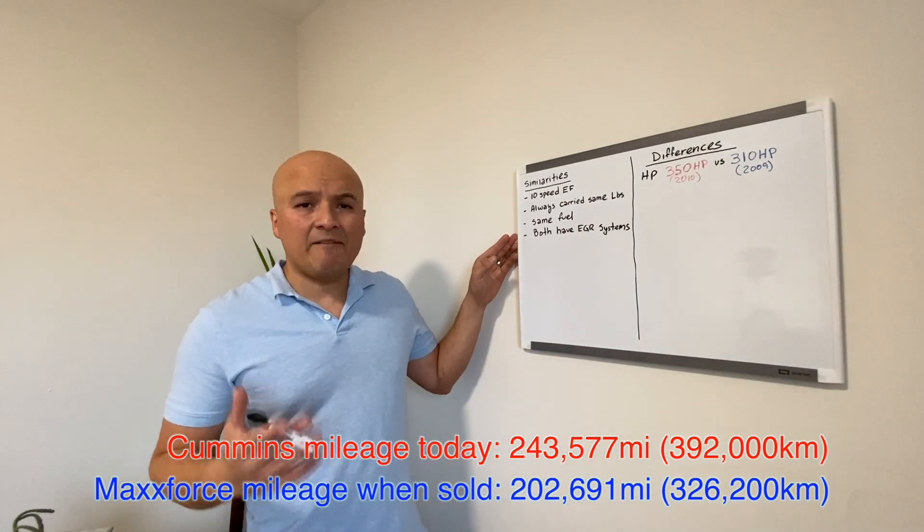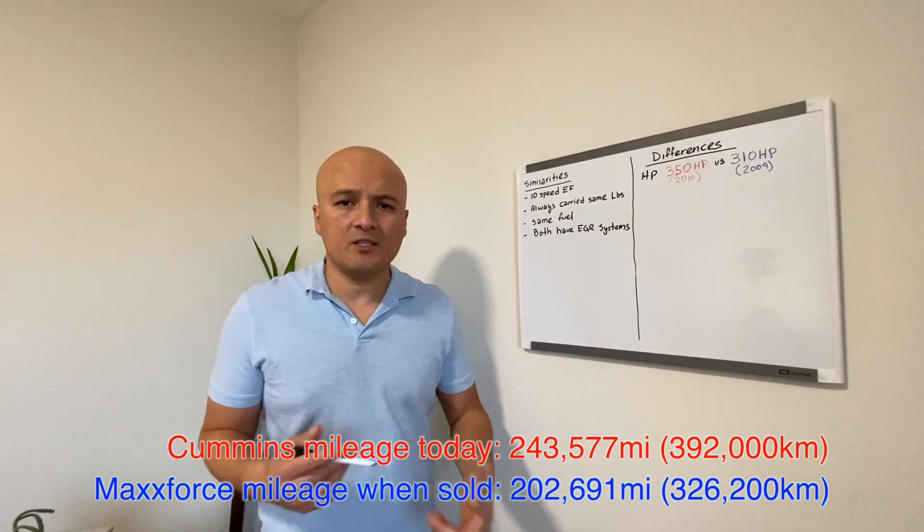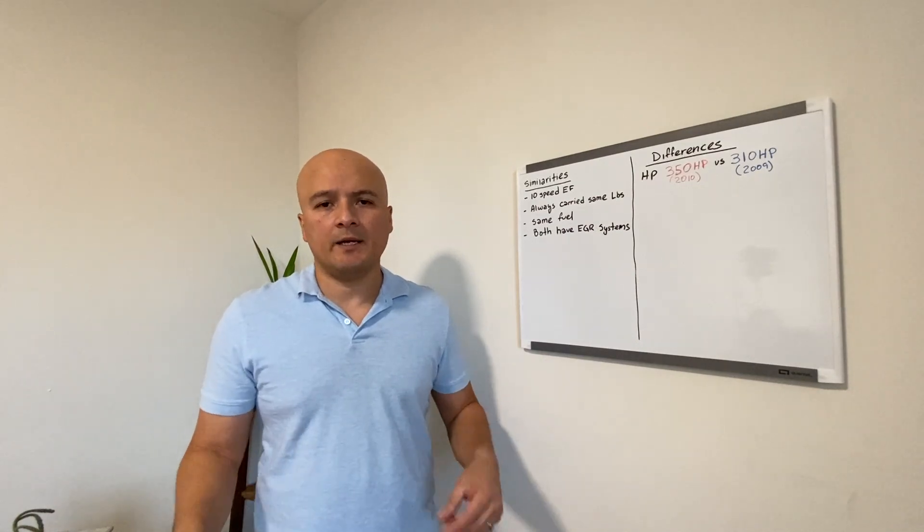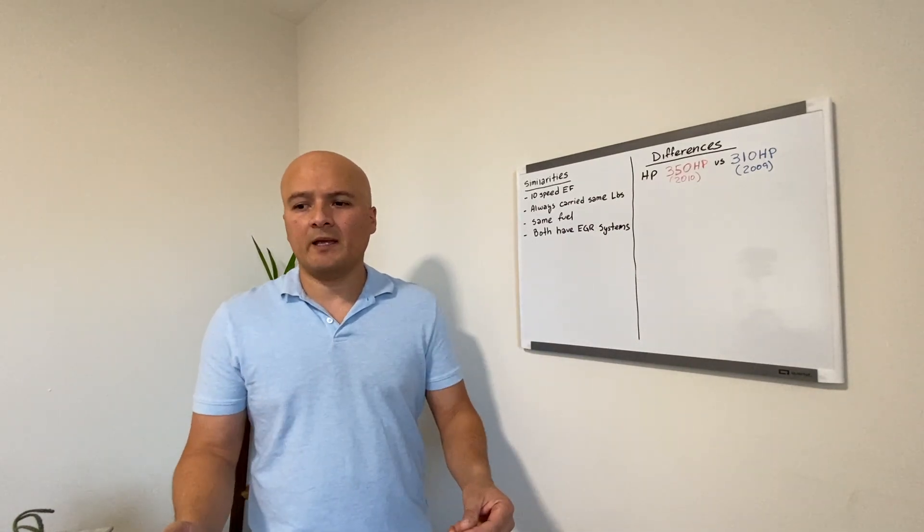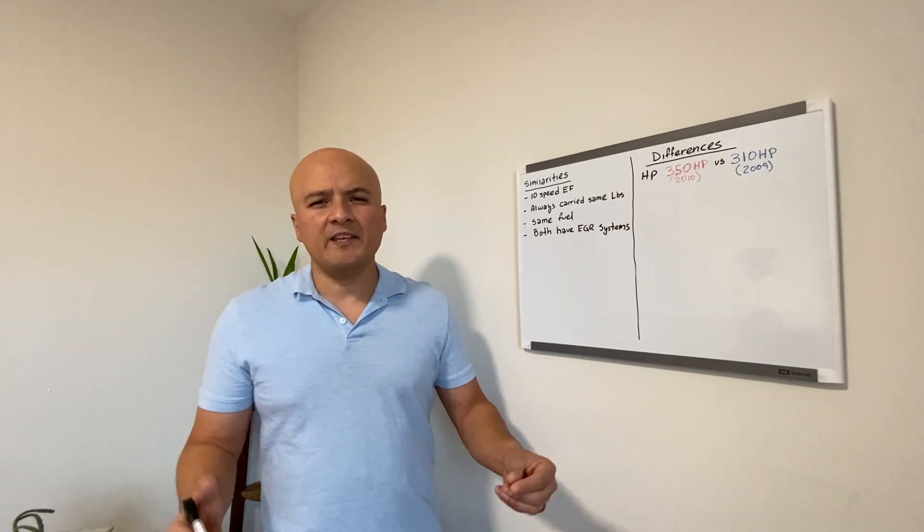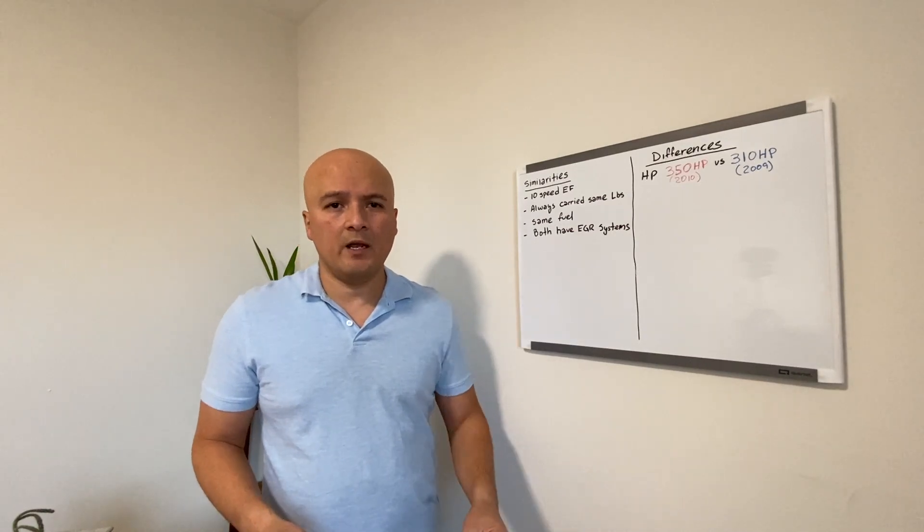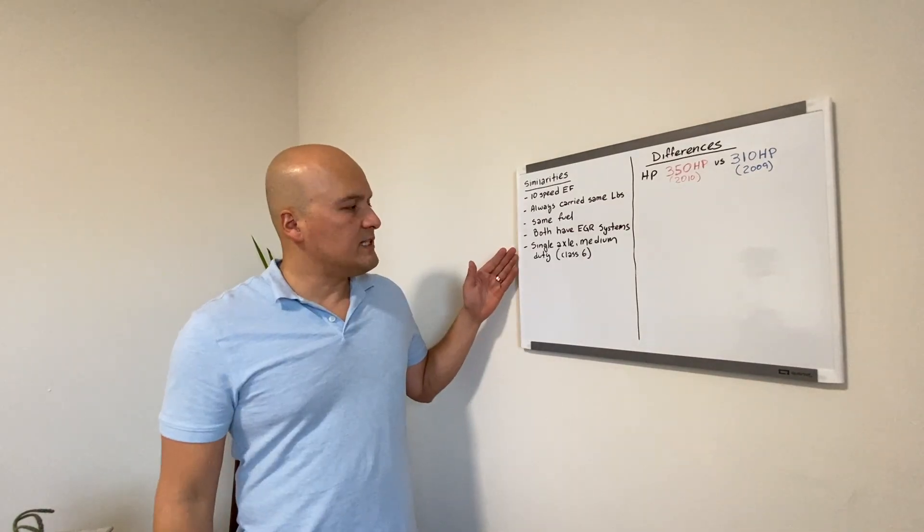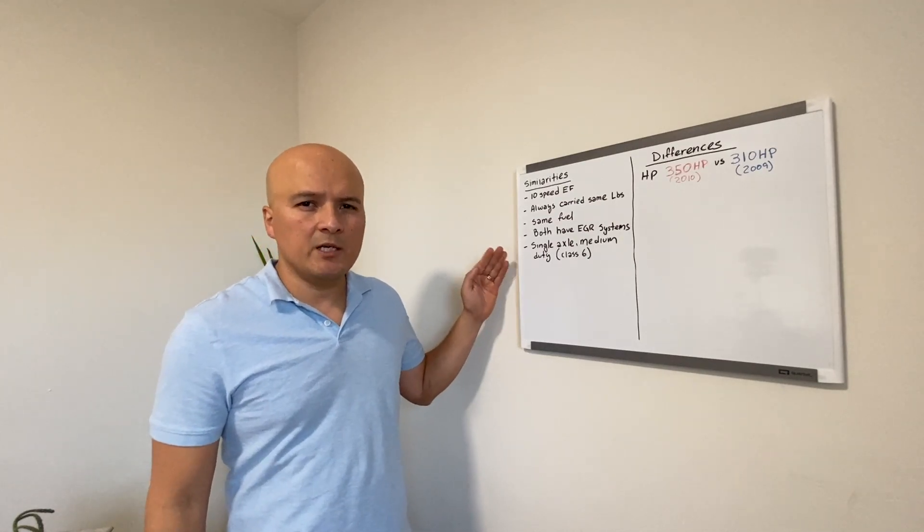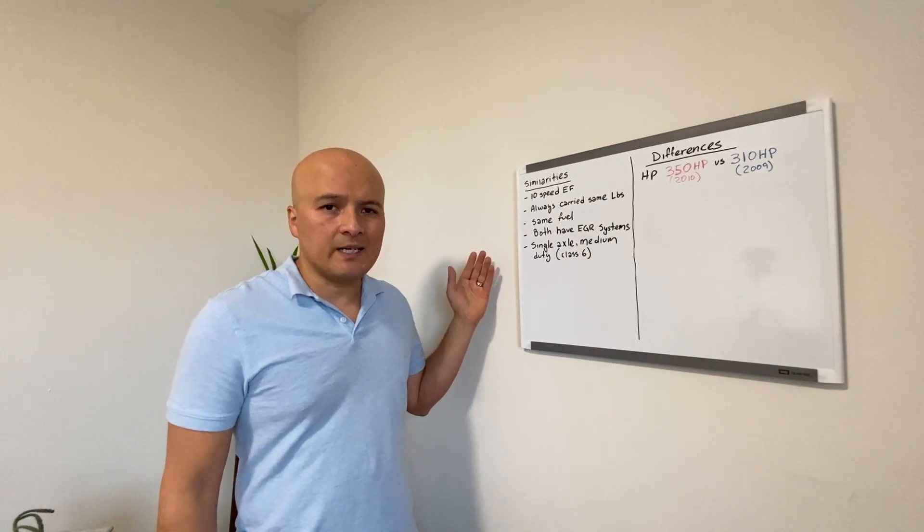Both engines have had EGR systems. EGR systems are exhaust gas recirculation systems. It just recycles the exhaust gases and re-burns it so it can minimize the amount of pollution going out into the air. Why these EGR systems are needed, that is another topic for another day for another video. Both of these engines are in a single axle truck, medium duty tractor, and they are both class 6 as well.